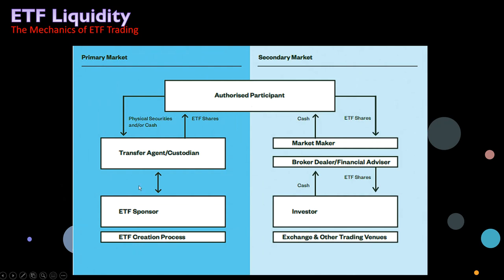This is the diagram of the primary and secondary market where ETF trading mechanics take place. Here is your AP and market maker, your transfer agent and custodian — this is where the transfer of ETF shares and physical securities and/or cash are done. Then you have your ETF sponsor and the ETF creation process. On the secondary market side, where you and I trade, the investor gives cash, the broker-dealer gives ETF shares, the market maker puts cash into the authorized participant, and ETF shares go out to the market maker.